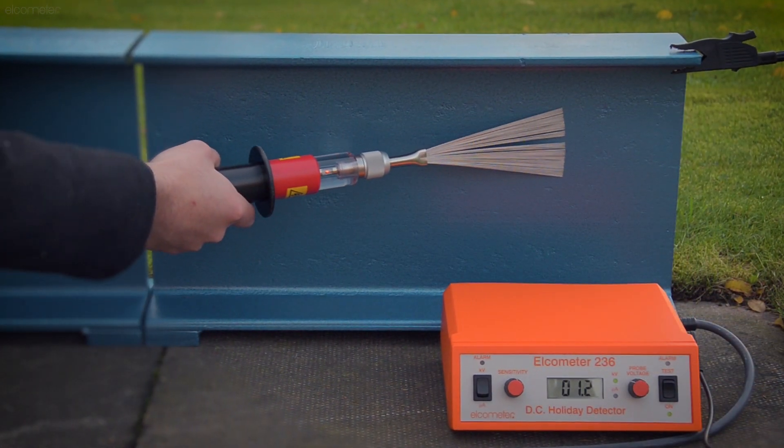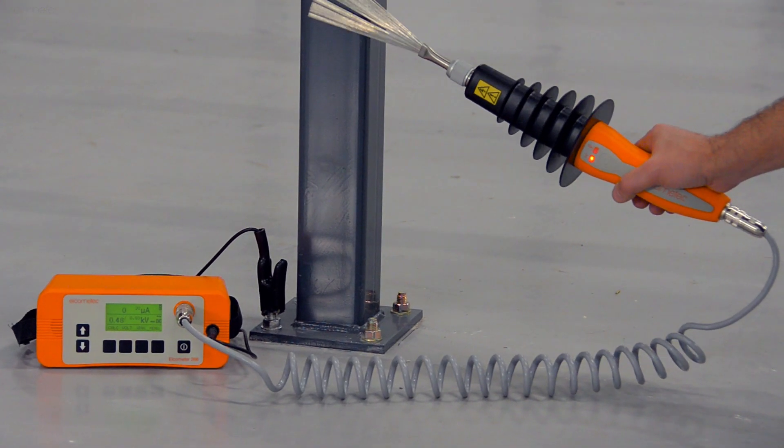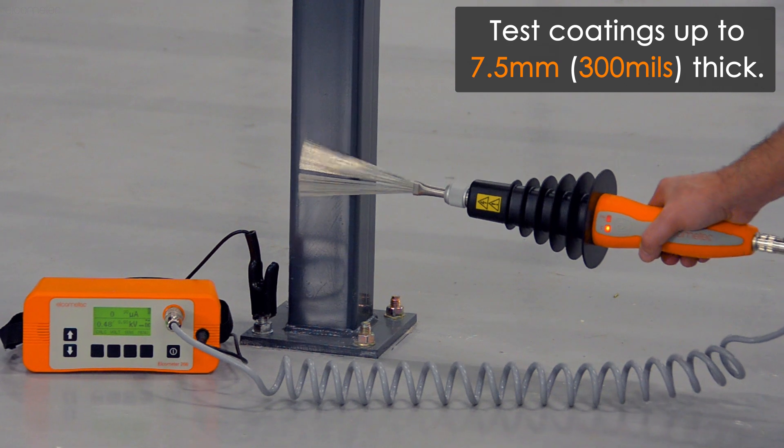Continuous DC, or DC units as they're commonly called, are typically used to test insulation coatings on conductive substrates up to 7.5mm or 300mm thick.